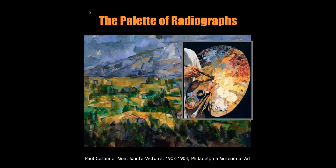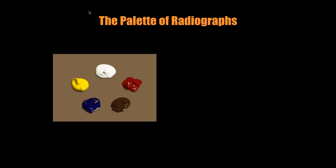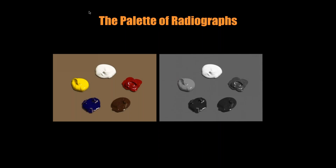In radiology we also have a palette of hues, but a much more limited palette than what Cezanne had. We have only five colors in radiography, and in fact they're not even colors — they're all shades of gray. Using only those five basic shades of gray, we represent all different materials on a radiograph: every medical device, every body tissue, every disease process has to be represented using just five shades of gray.